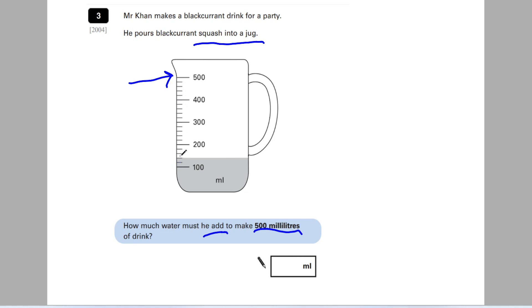So again, 1, 2, 3, 4, 5. So there are 5 increments before we get to the next 100 millilitres. So I'm going to do 100 divided by 5, that gives me 20. So each one of these small increments stands for 20. So we've got 120, 140, 150, 160, 180, 200. So it works.